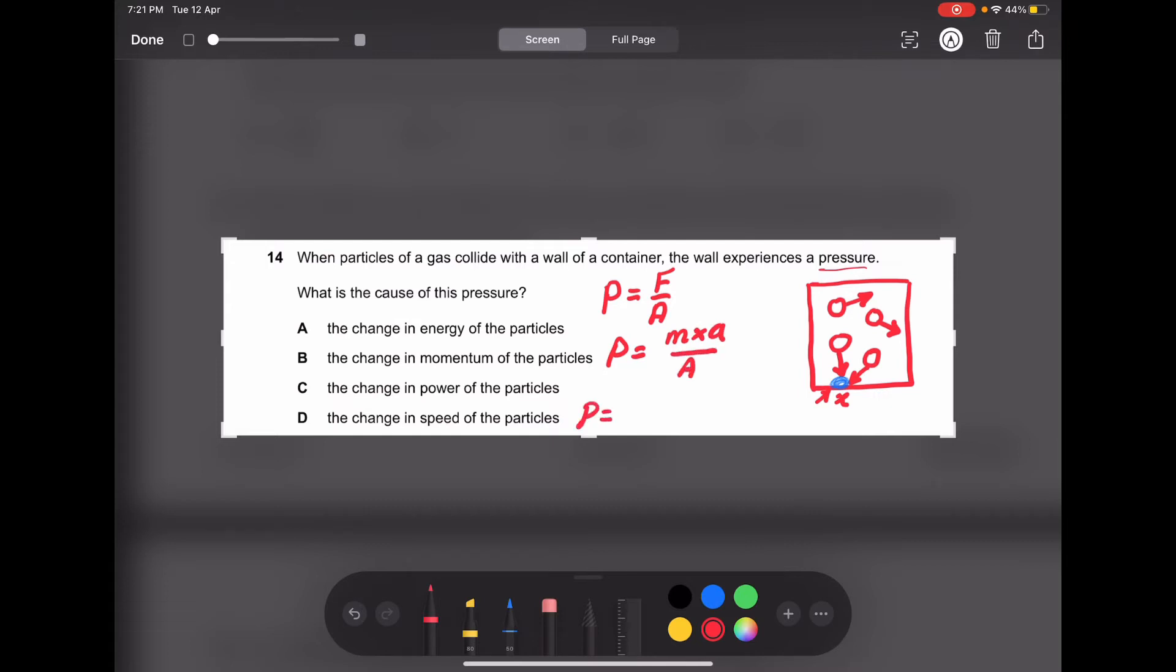Pressure equals M divided by the cross-sectional area and times the acceleration. It's V over T, velocity over time.